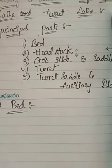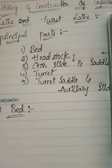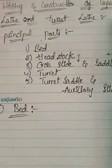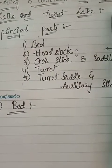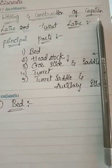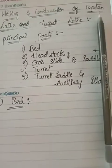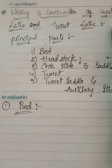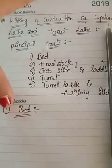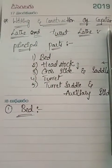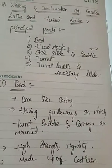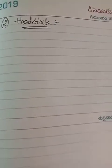The bed is made of cast iron, which gives it high rigidity, more strength, and high hardness. It is used for heavy duty services. The vibrations produced during machining are absorbed by the bed. These are the key elements of a bed.